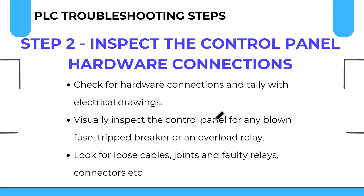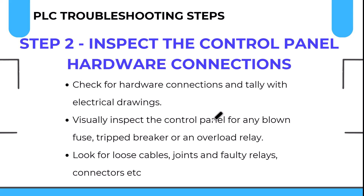Step two is to look at the visual status of the control panel. Visually inspect the panel and make sure there is no blown fuse, no tripped breaker, and no operated overload relay. Make sure breakers, fuses, and relays are in their normal state — connections are tight and fuses have not blown. Also look for loose cables, joints, faulty relays, and connectors. Make sure relay contacts are properly passing the signal.